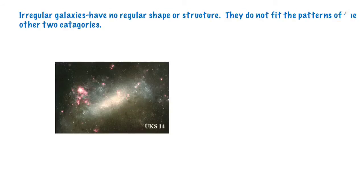Irregular galaxies have no regular shape or structure, and they don't fit the patterns of the other two categories. Some have a lot of dust, and some are just strange shapes.